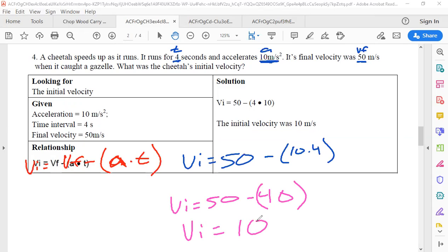So the cheetah was already going 10 meters per second when it saw the gazelle. That's what the story tells us. We can find that just by using the equations that I've taught. I'll make sure that the homework that I post for tonight, the extra practice, it'll have a couple of Vi problems in it. I'm going to get those in there actually right now. So thanks for planning.